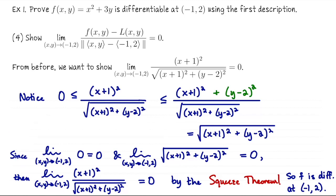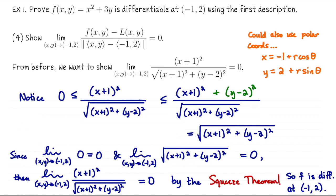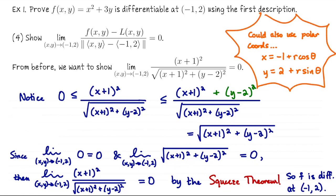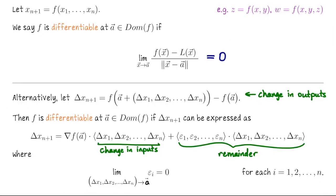If you're thinking you wouldn't have thought to use the squeeze theorem in that way, you can also use polar coordinates to prove that this limit goes to zero. You're not approaching the origin, so you need polar coordinates centered at the point (negative 1, 2): x equals negative 1 plus r cosine theta, and y equals 2 plus r sine theta. As you let r go to zero, x and y go to (negative 1, 2). When you plug those in, all the plus 1's and minus 2's simplify greatly, so that's a pretty basic polar calculation.